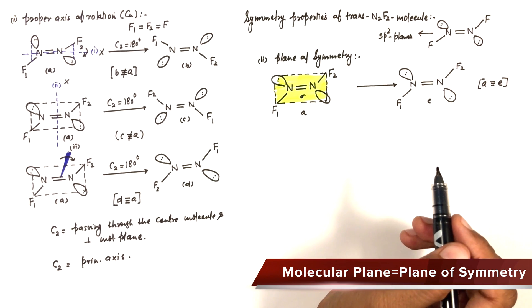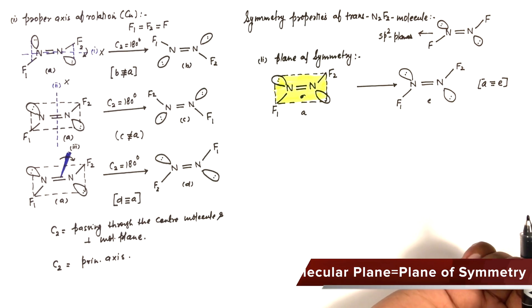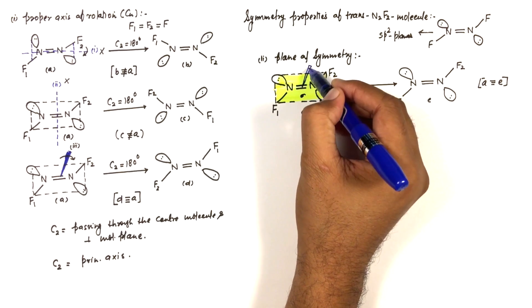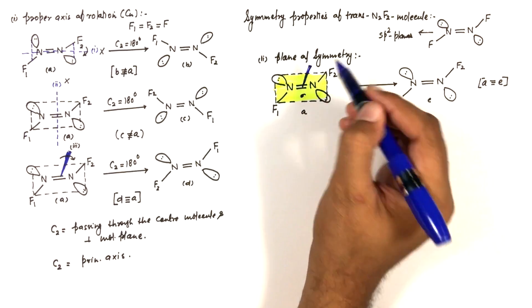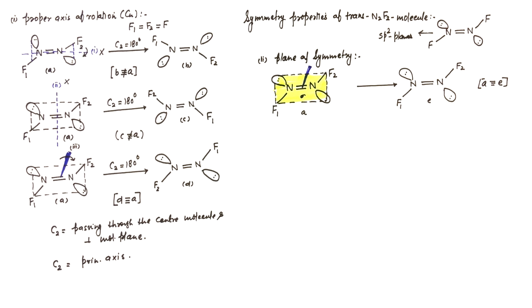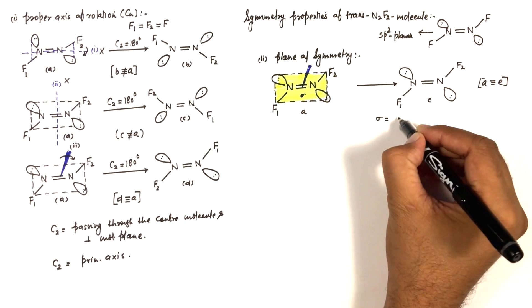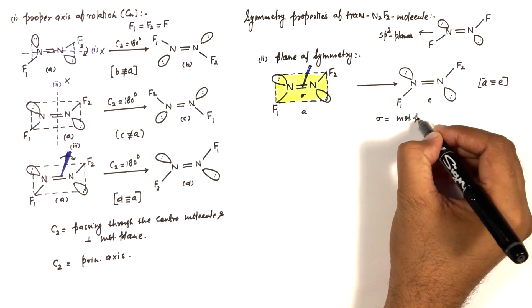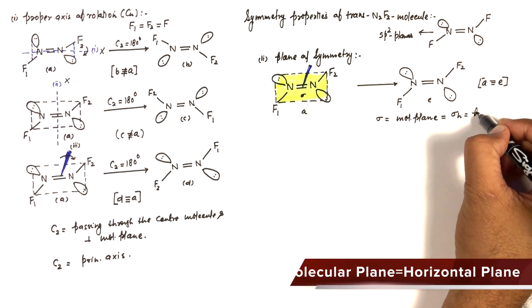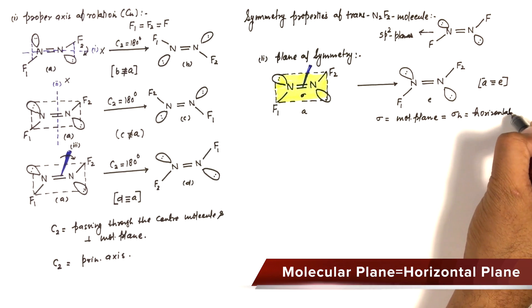Now the question is: is this molecular plane a horizontal plane or a vertical plane? The principal axis of rotation passes through the center of the molecule and is perpendicular to the molecular plane. Since the plane is perpendicular to the principal axis, it is considered a horizontal plane (σh). So this molecular plane is the horizontal plane, σh.